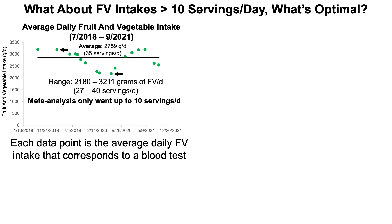At the low end of my range, I've consumed 27 servings per day — still higher than the meta-analysis — as indicated by the black arrow, and as high as 40 servings per day. Each of these data points is the average fruit and vegetable intake corresponding to a blood test, and I've fully introduced this approach in previous videos.